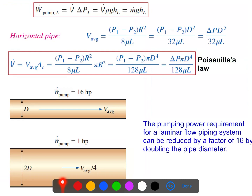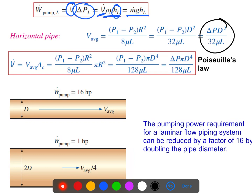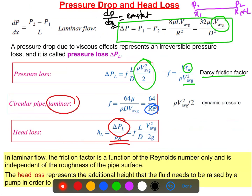Once we have the head loss or pressure drop, we can calculate the pumping power. The pumping power can be expressed as volume flow rate times pressure drop, or as volume flow rate times ρg times head loss, or as mass flow rate times head loss. For a horizontal pipe, we can also calculate the average velocity and volume flow rate. We'll apply these formulas when solving problems.